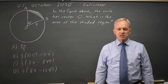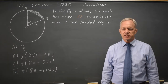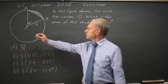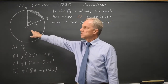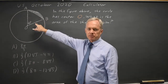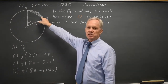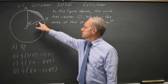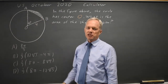I'm Dr. Roger and this question is from the October 2020 U.S. SAT Calculator section. College Board gives us a circle with a sector and a triangle, and they want to know the area of the shaded region, which is the area inside the sector but outside the triangle.